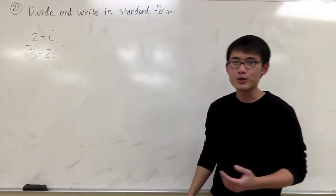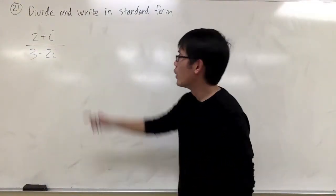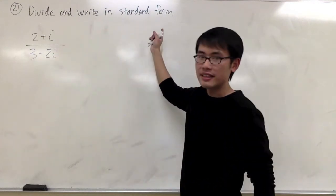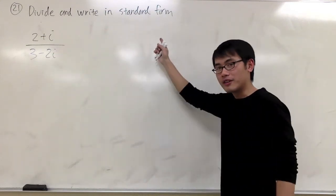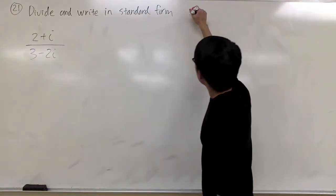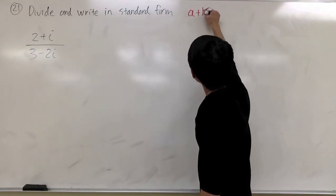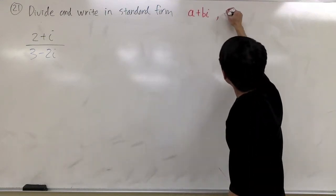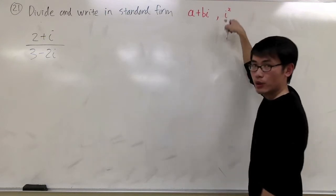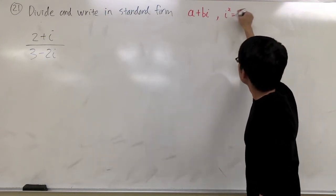For question number 21, we are going to deal with complex numbers. We are going to divide and write in standard form. The standard form of a complex number is a plus bi, where i is the number that when you square it, you will get negative 1.